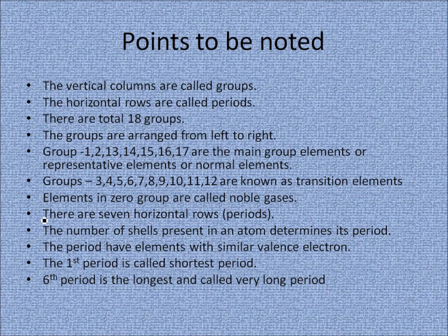Key notes on the modern periodic table: vertical columns are groups, horizontal rows are periods; there are 18 groups total, arranged left to right. Groups 1, 2, 13–17 are the main groups, also called representative or normal elements. Groups 3–12 are known as transition elements. The elements in group 18 (the zero group) are called noble gases, as they are unreactive and do not take part in reactions.